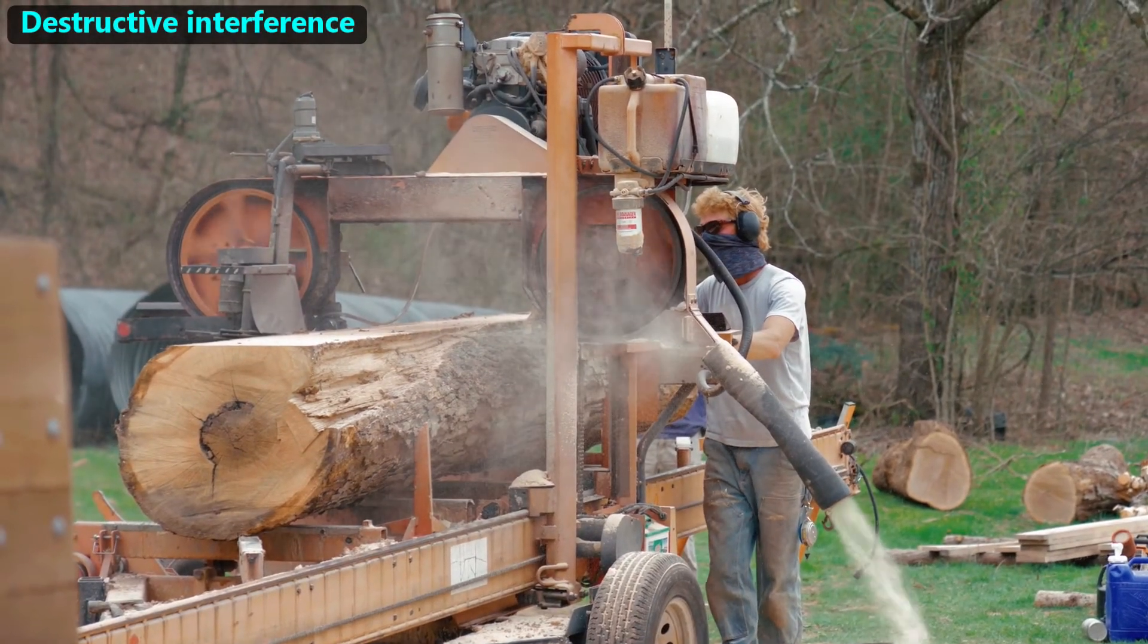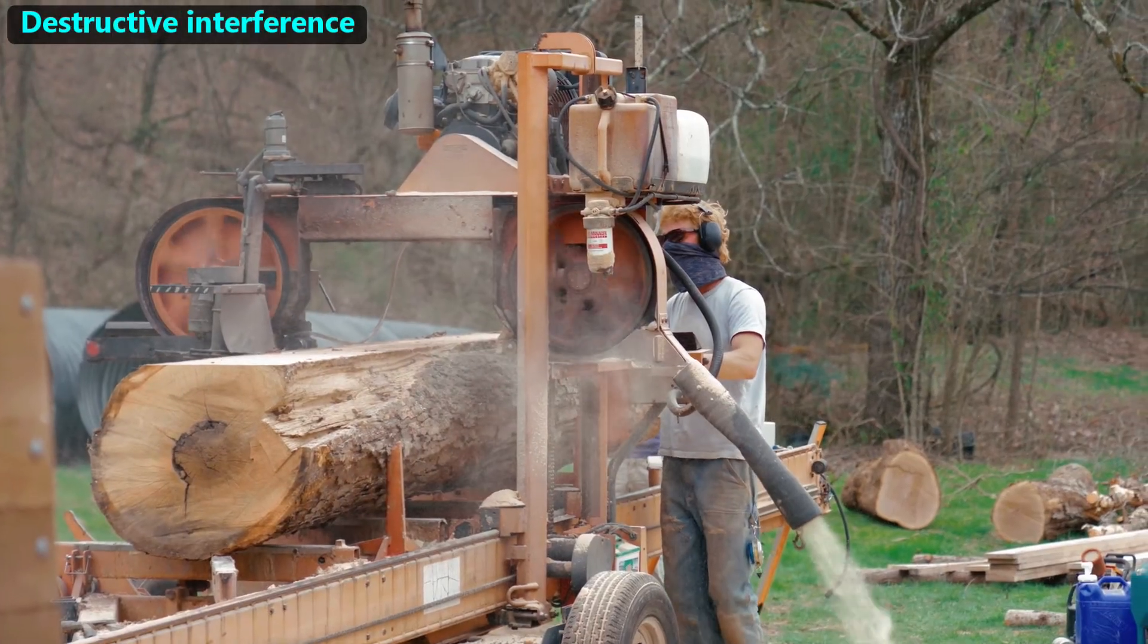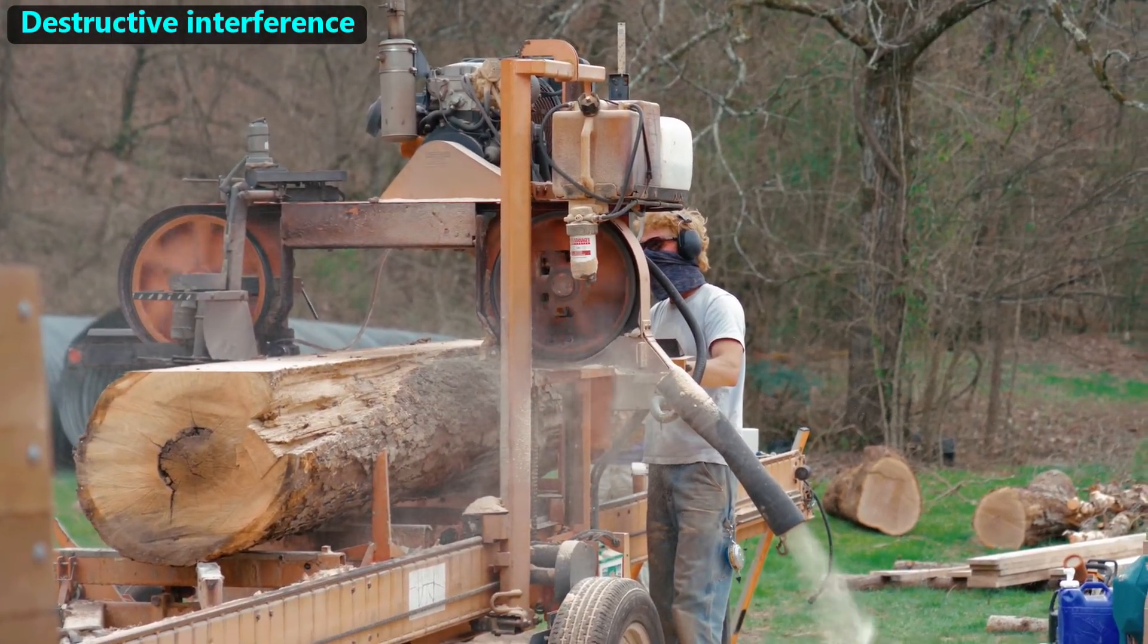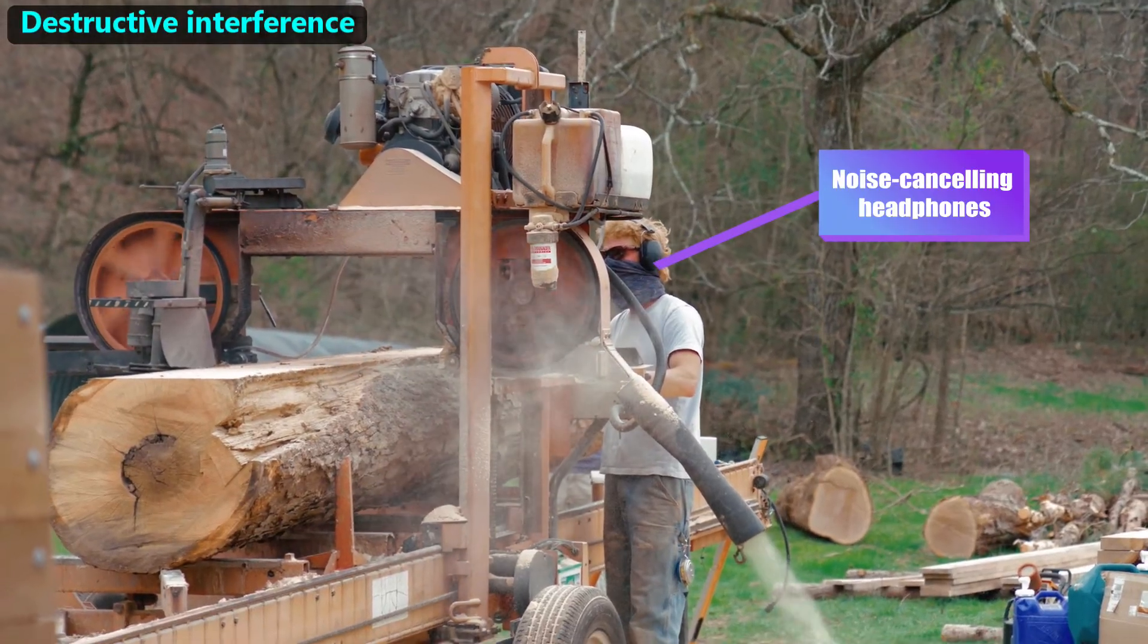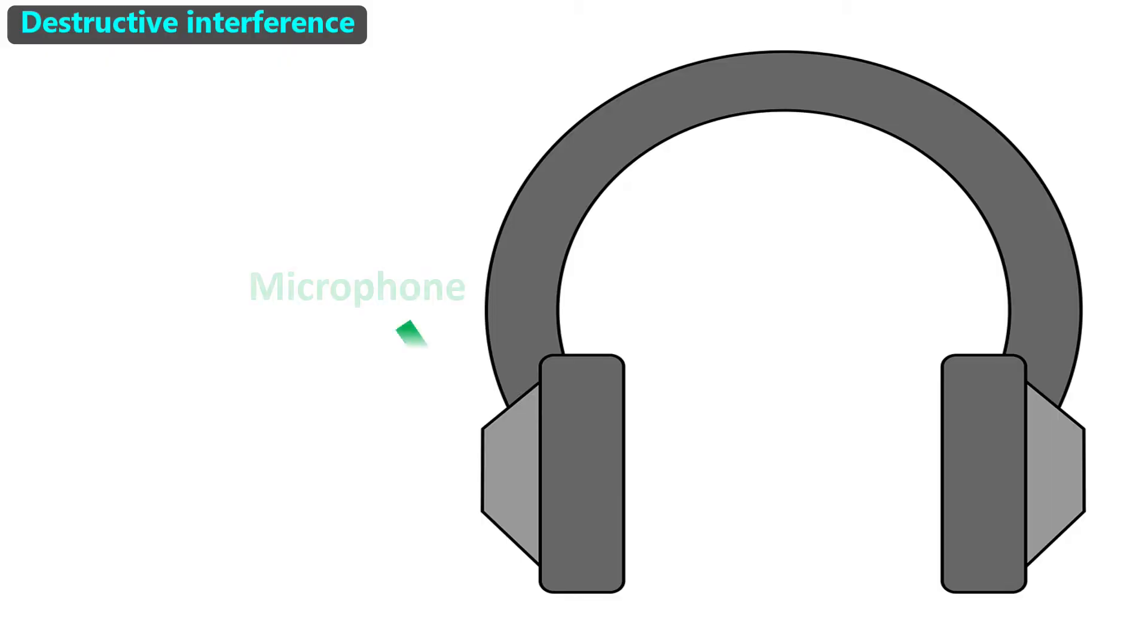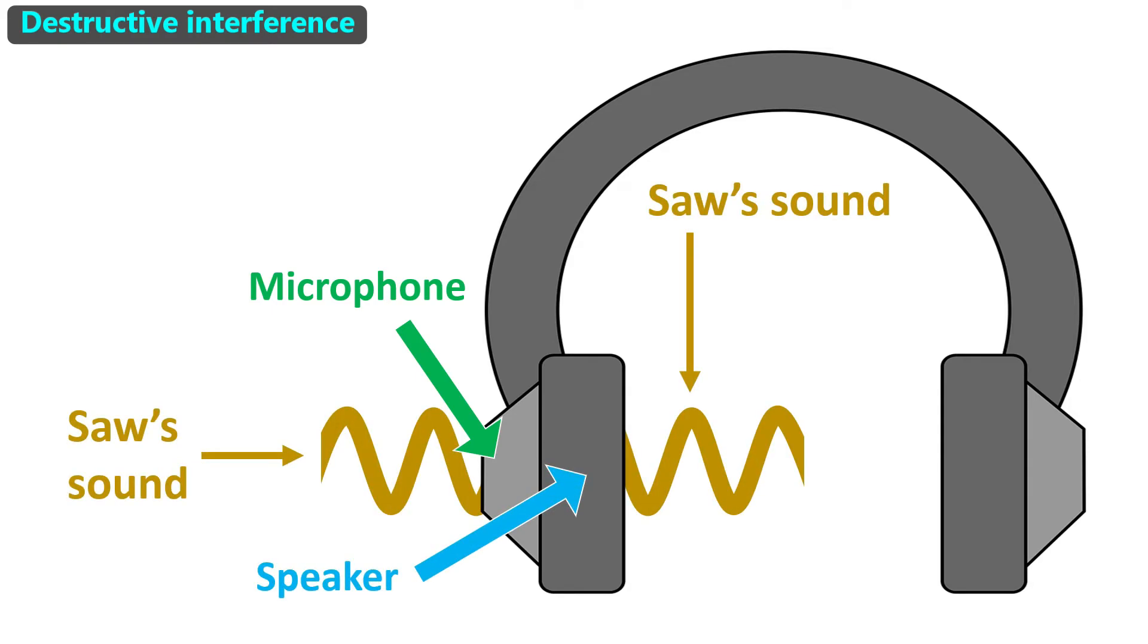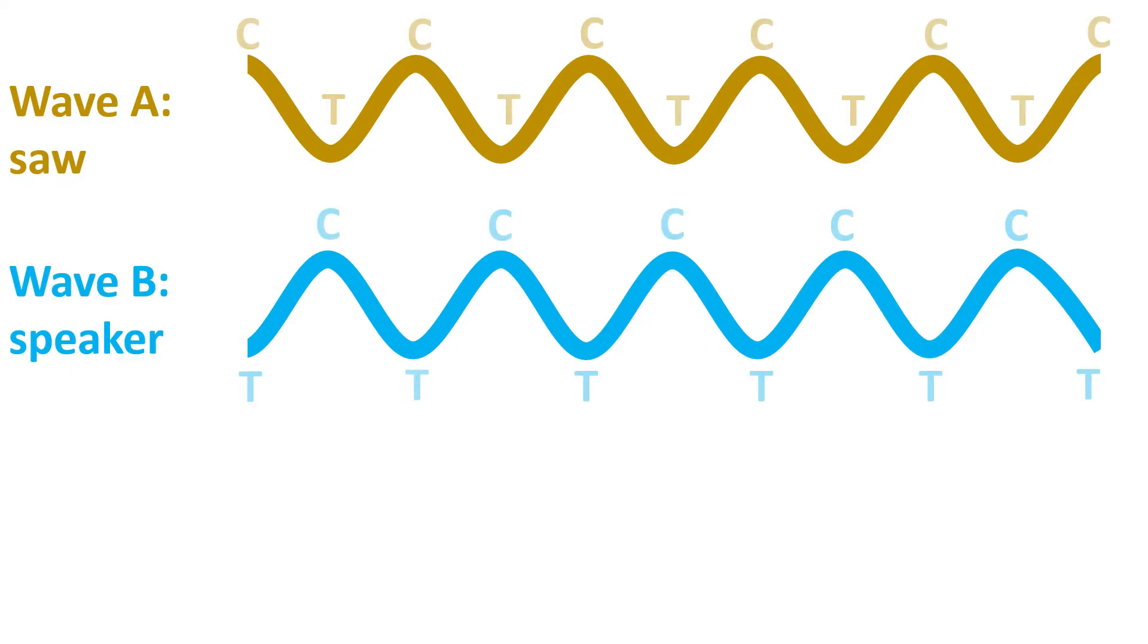The second type of superposition we'll introduce is called destructive interference. To study it, we'll graph sound waves made by this saw and this person's noise cancelling headphones. These headphones work by having a small microphone on the outside of the ear covering and a speaker inside. The speaker makes a sound wave that has the same wavelength as the saw's noise, but yet the person hears nothing.